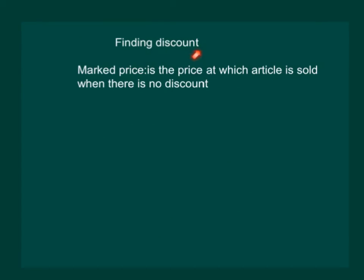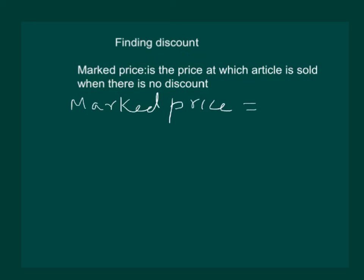Before explaining discount, it is important to understand mark price. Mark price is the price at which an article is sold when there is no discount. In other terms, mark price is the same as the sale price when there is no discount. But sometimes we get certain reductions or there is a sale in some departmental store; then the discount comes into play, and in that case mark price and sale price become two different things.